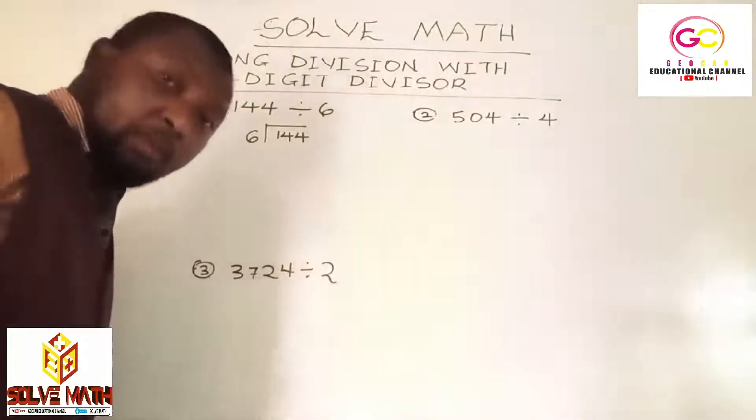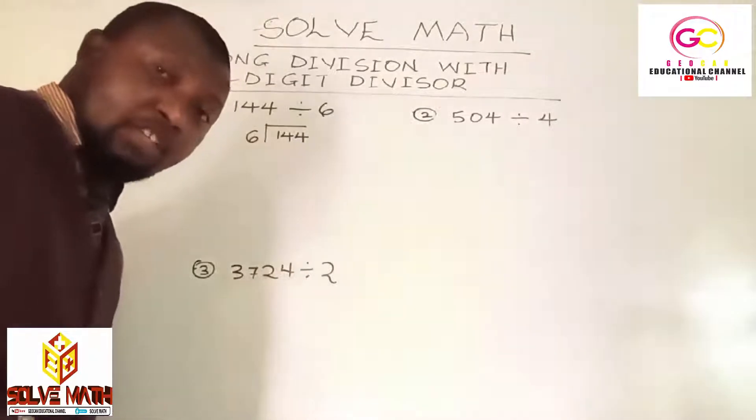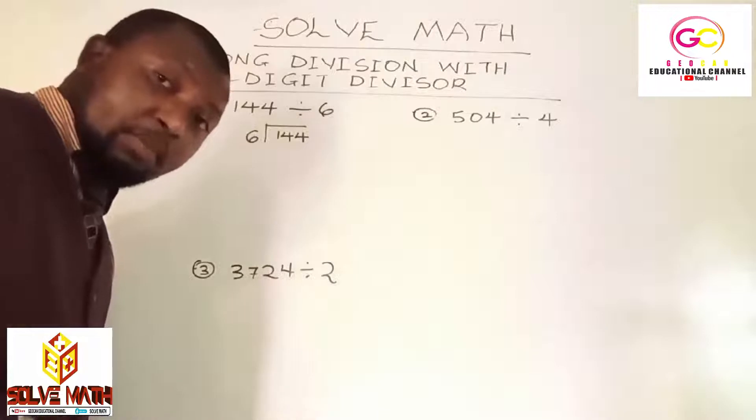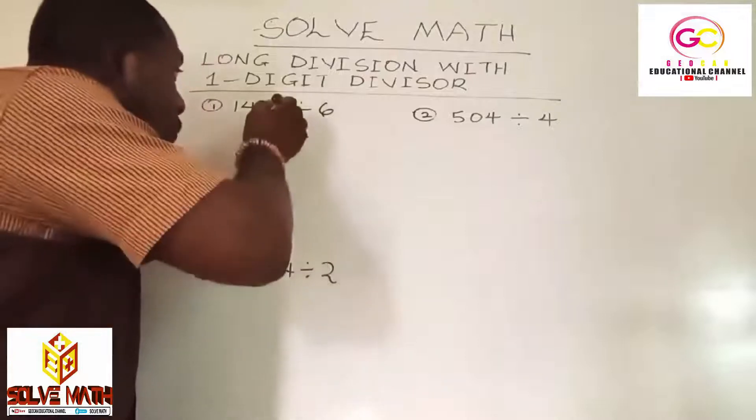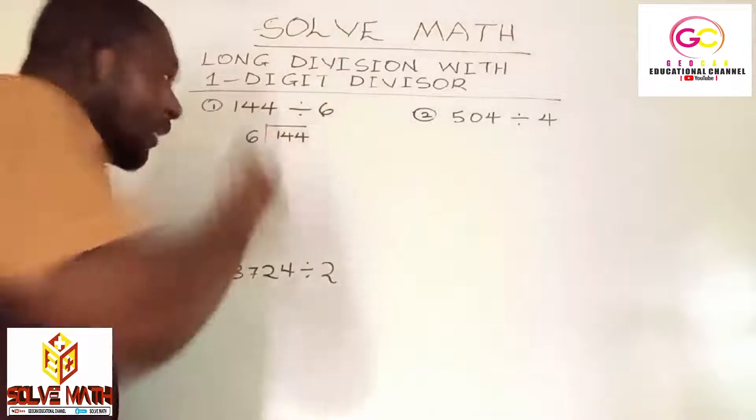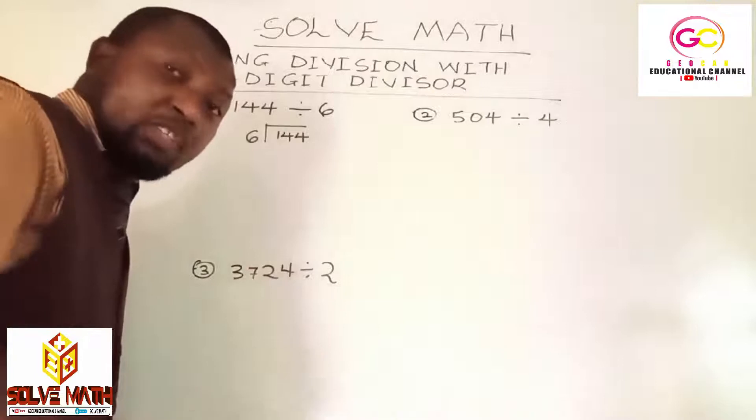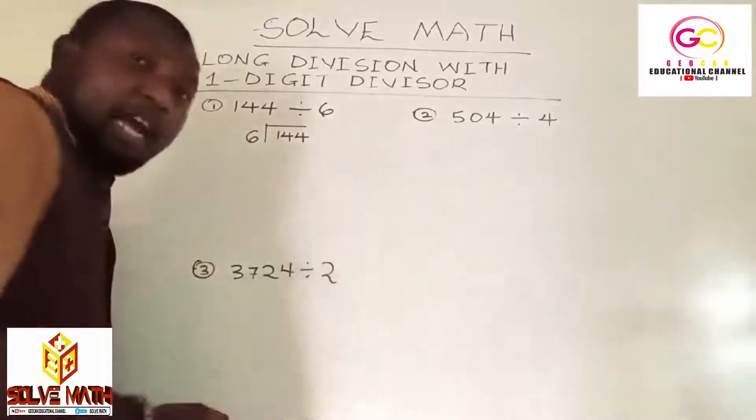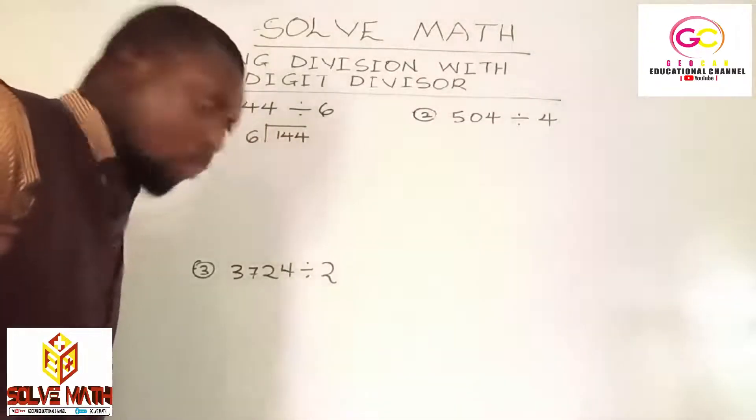What it means is that we are using the 6 times table. As I said, multiplication is the basis for division, so take your multiplication very seriously. Now, 6 will go into 1 how many times? Let's take it digit by digit. 6 can't go into 1. What it means is join the other number. When you join the other number to the 1, now you have 14.